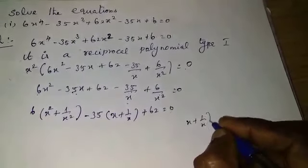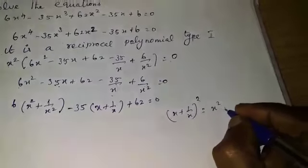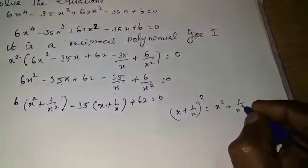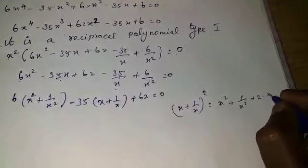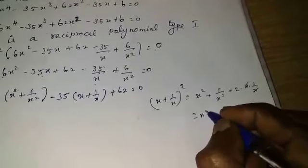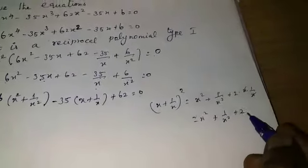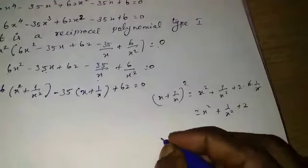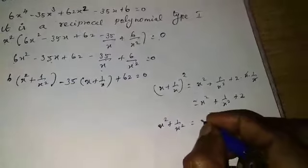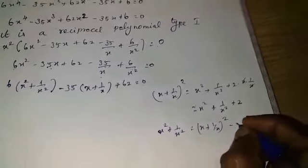We know the formula: (x plus 1 by x) whole squared equals x² plus 1 by x² plus 2 times x times 1 by x. Since x times 1 by x cancels, we get (x plus 1 by x)² equals x² plus 1 by x² plus 2. Therefore x² plus 1 by x² equals (x plus 1 by x)² minus 2.